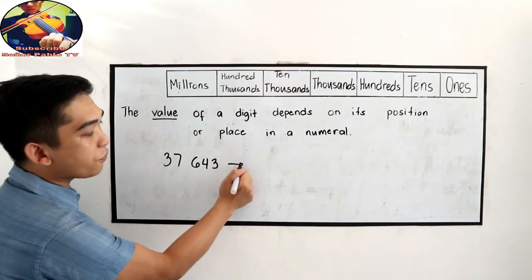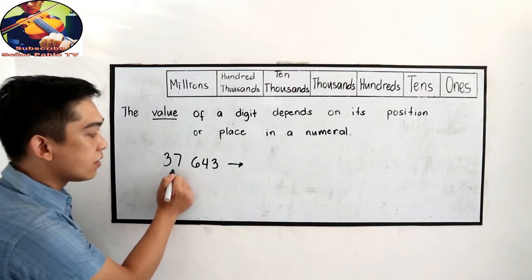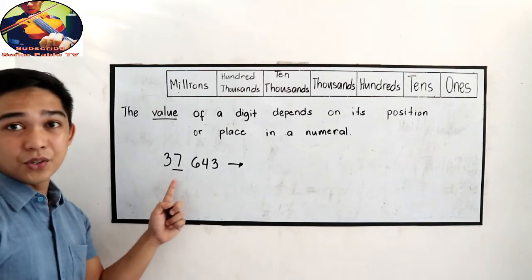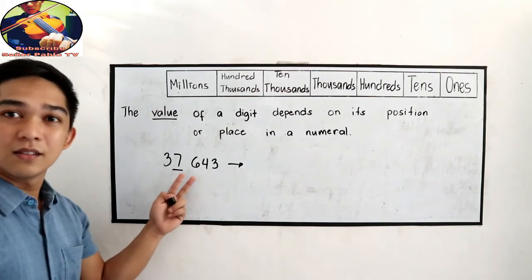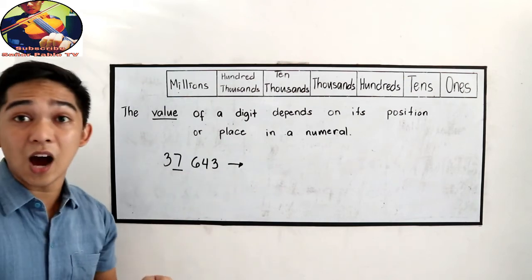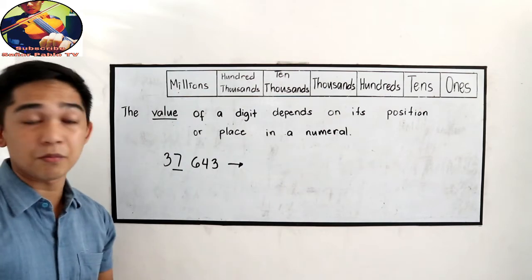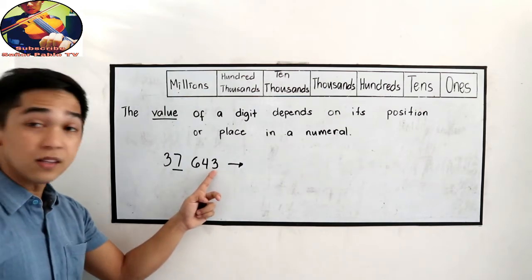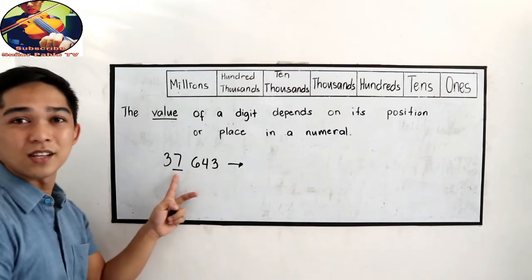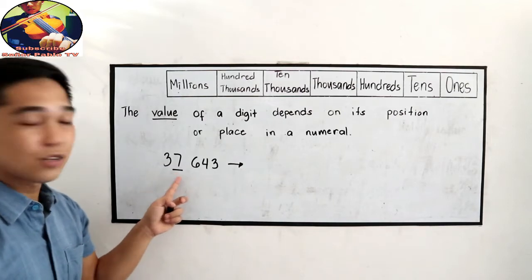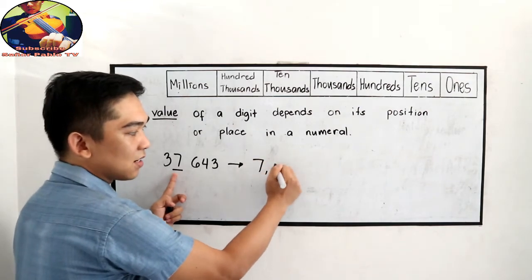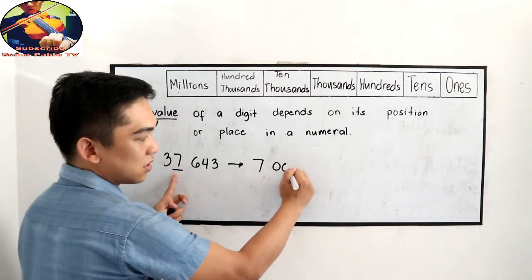We're going to find the value of the underlined number. Let's say the underlined number is 7. What is the value of 7 in this number or these digits? Let us recall our place value, the position of the numbers. We have ones, tens, hundreds, thousands. So the place value is thousands. So that means the value of 7 here is 7,000.